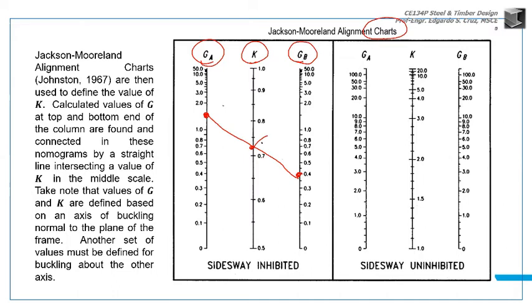Then whatever intersects here, that's your K value for that column. This is your K value for that column - say 0.75, maybe around 0.72. So that would be your K for that column. Basically, to use this chart to get K, you need to first solve GA and GB, then plot them on the chart, draw a line intersecting K values.